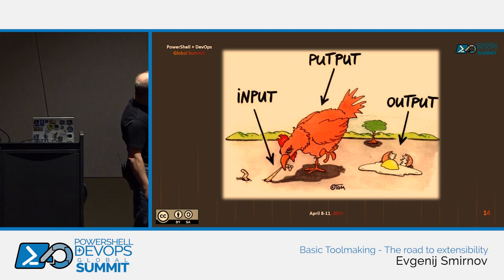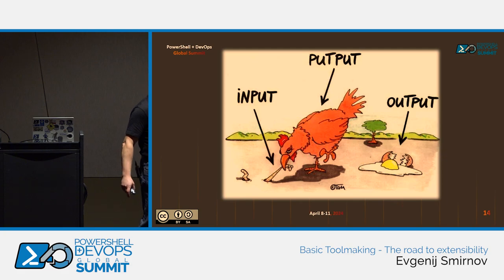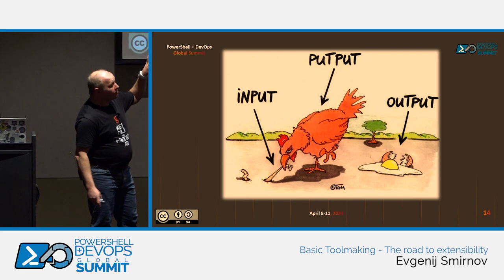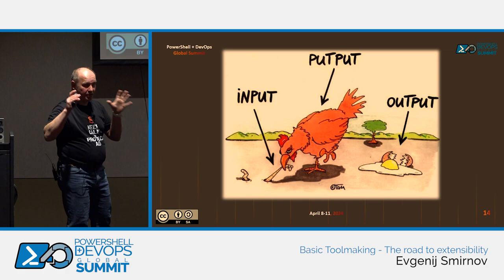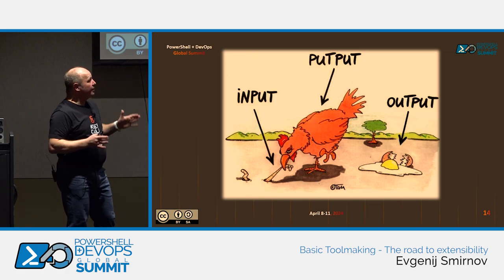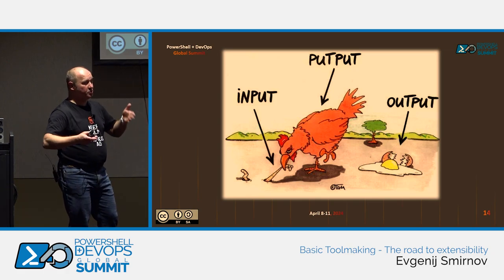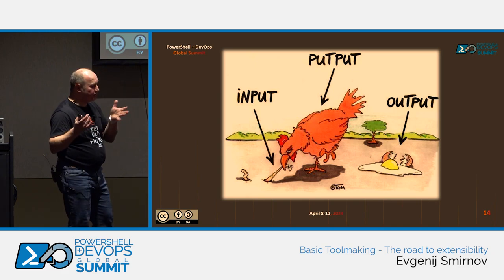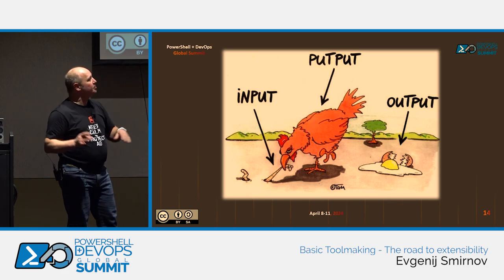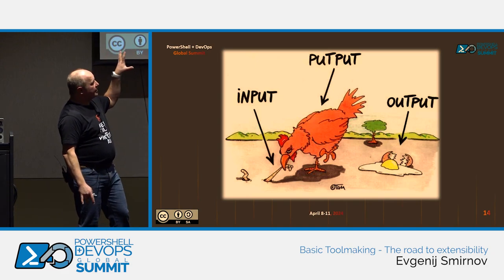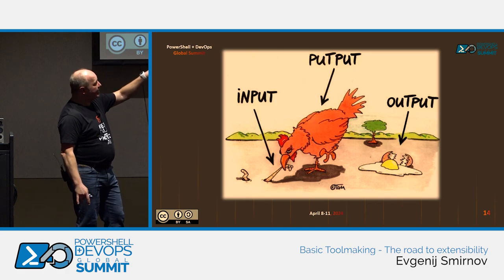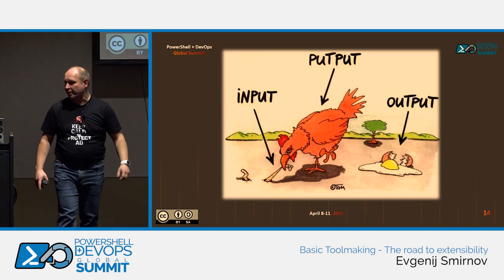Now let's look at the universal flowchart of all computing: input, data processing, output. I will not be talking about the part in the middle, because that is up to you as tool makers. But input and output are both fields where extensibility will clash with usability if you do not plan accordingly.